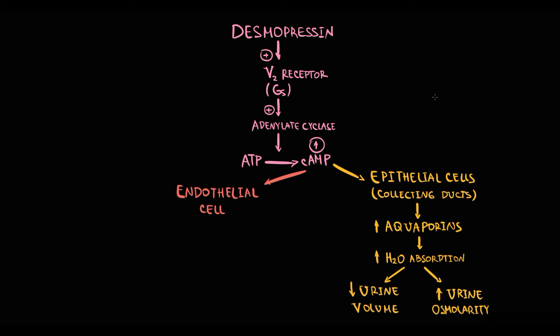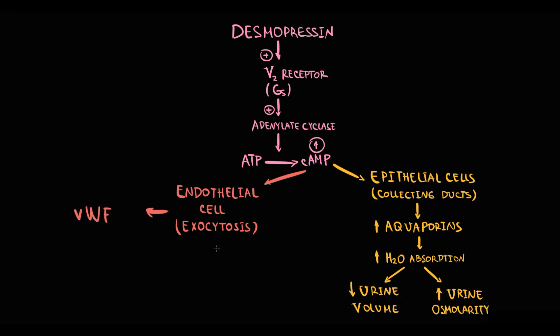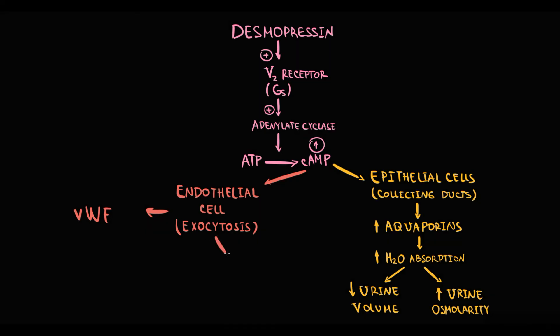In relation to endothelial cells, increasing cyclic AMP induces exocytosis from endothelial cells. First of all, it causes exocytosis of von Willebrand factor, thereby increasing the level of von Willebrand factor in the blood. It also causes exocytosis of factor VIII. As we know, factor VIII provides secondary hemostasis, so by increasing the amount of factor VIII we can improve secondary hemostasis.